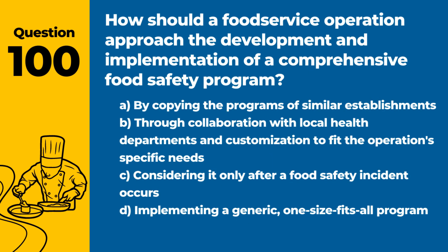Question 100. How should a food service operation approach the development and implementation of a comprehensive food safety program? Answer: B. Through collaboration with local health departments and customization to fit the operation's specific needs. A tailored food safety program addresses specific risks and promotes effective management practices.